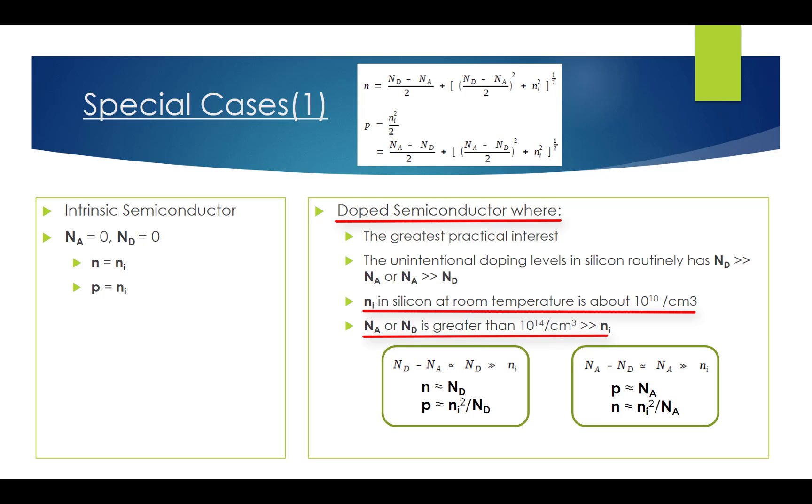Thus, we can see that Nd or Na is far greater than ni. This special case is the usual case encountered in practice. If Nd minus Na is approximately equal to Nd and far greater than ni, then from the n and p general case expressions, we get n approximately equals Nd and p approximately equals ni squared divided by Nd. Alternatively, if Na minus Nd is approximately equals to Na and far greater than ni, then we get p approximately equals to Na and n approximately equals to ni squared divided by Na.